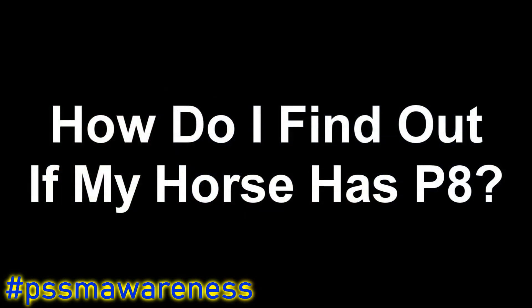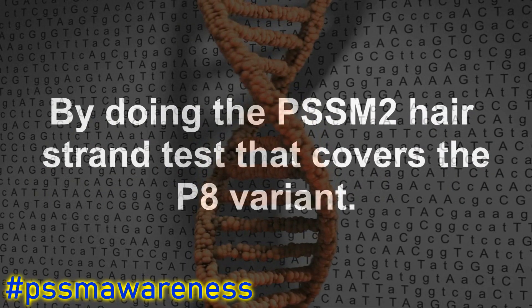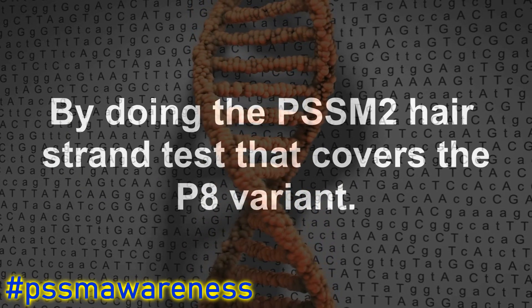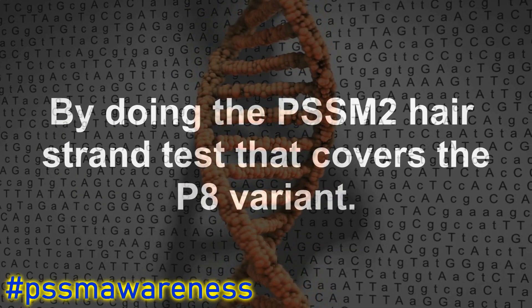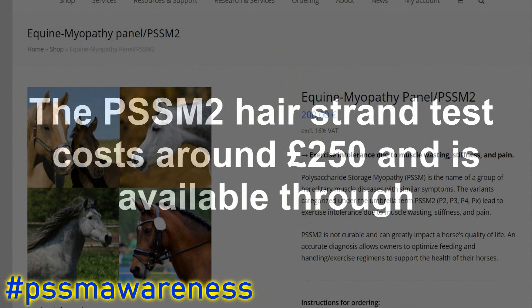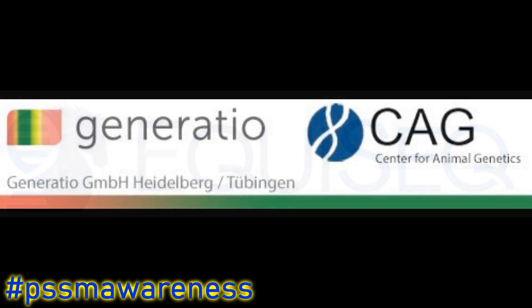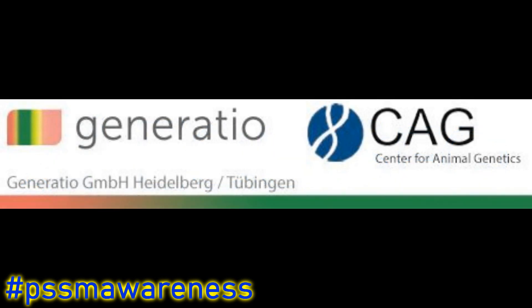How do I find out if my horse has P8? By doing the PSSM2 hair strand test that covers the P8 variant. The test costs around £250 and is available through Equisec for USA owners, and Generatio CAG for the UK, Europe, and the rest of the world.